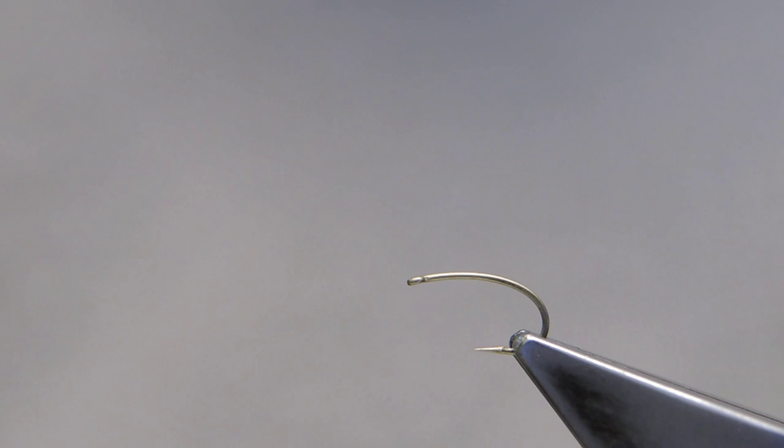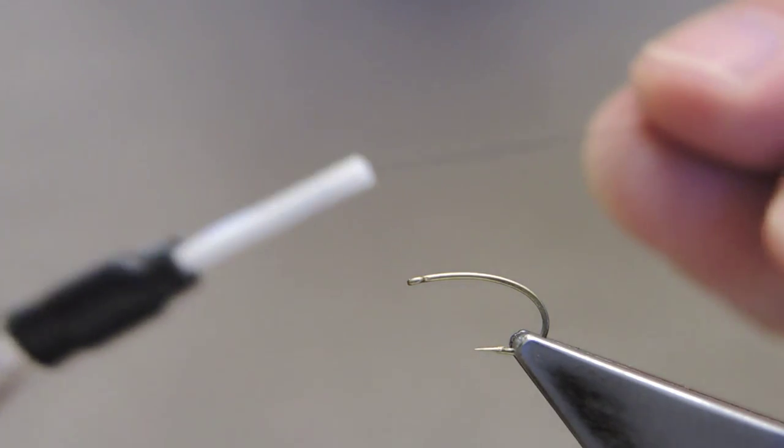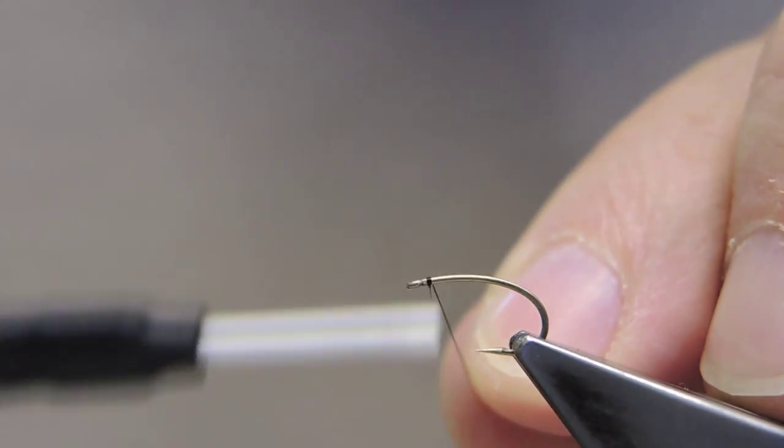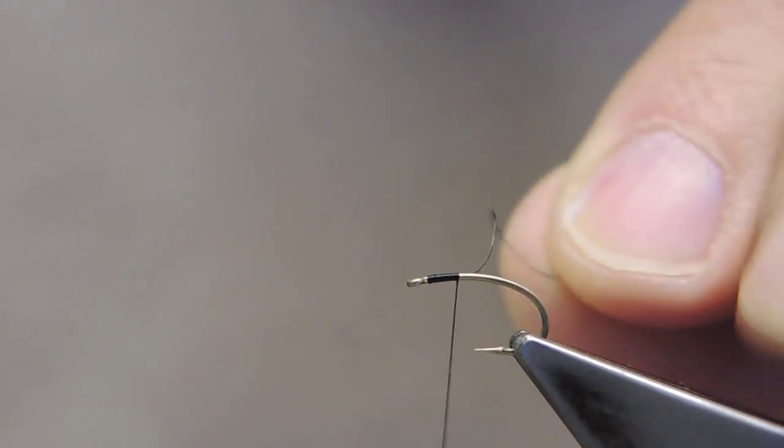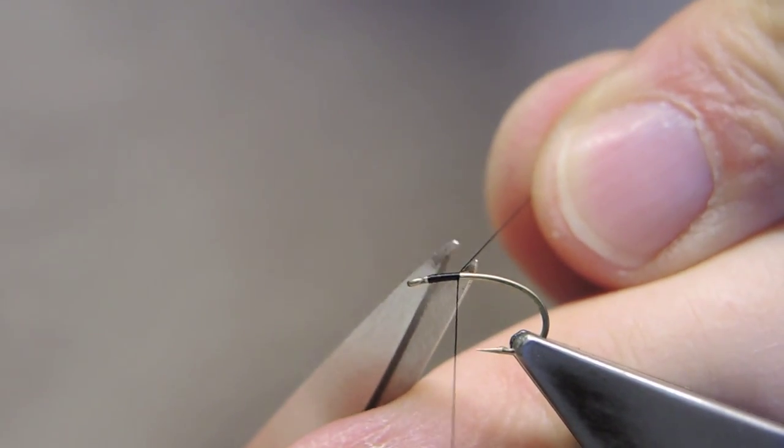The hook and vise is a Umpqua U201, size 14, and the thread is Benecki 12-volt in black, just attached at the eye, and then run down a little ways, and trim away the waste.